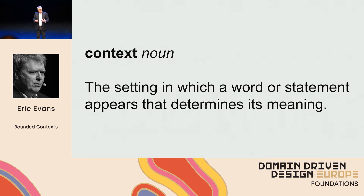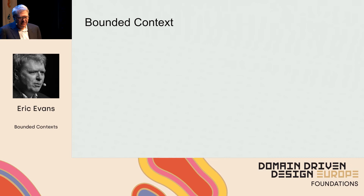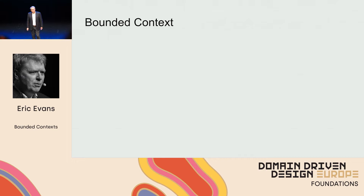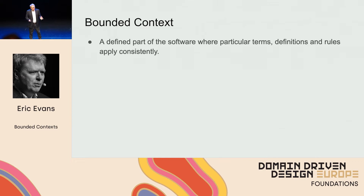The bounded context idea says: let's limit this artificially and very consciously — not just around the connections within the software, but around the meanings of the terms themselves. If we're going to use ubiquitous language and clear domain models, we've gone to some trouble to define our concepts very precisely. We want to be able to say where these definitions apply. A bounded context is literally a context with a boundary.